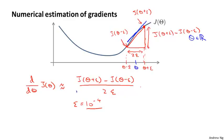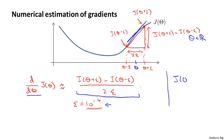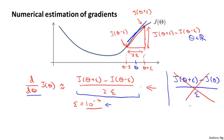There's usually a large range of different values for epsilon that work just fine. If you let epsilon become really small, then mathematically this term actually becomes the derivative — exactly the slope of the function at this point. It's just that we don't want to use epsilon that's too small, because then you might run into numerical problems. I usually use epsilon around 10 to the minus four. By the way, some of you may have seen an alternative formula called the one-sided difference, whereas the formula I described is the two-sided difference. The two-sided difference gives a slightly more accurate estimate, so I usually use that.